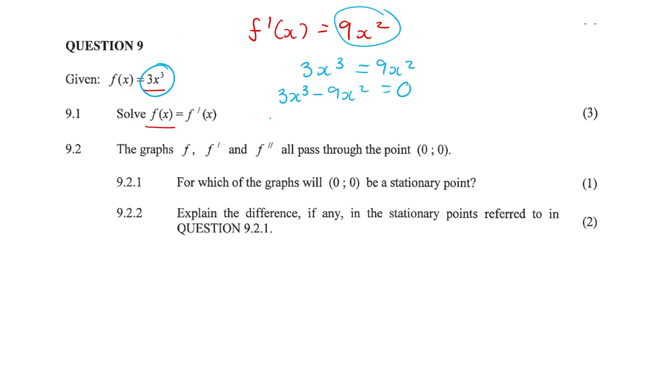Now we take out a common factor here. The highest common factor is going to be 3x². What's left in the bracket x - 3 = 0. Therefore x = 0 here or x = 3.